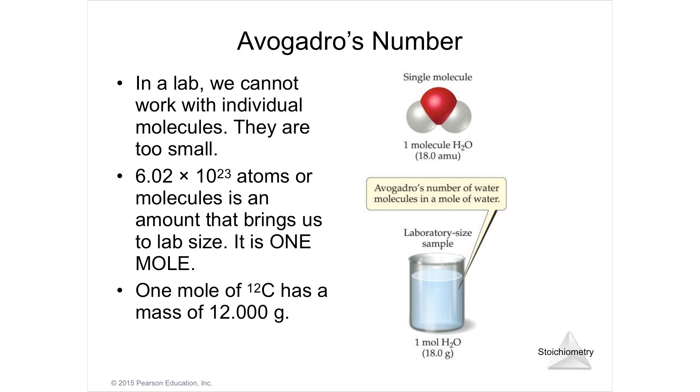Avogadro's number, which is named not for the guy who discovered this, but it was named memorially for a scientist, is a certain amount that is equal to the amount in grams on the periodic table of any element. If you look on the periodic table and you see in AMUs the atomic mass, let's say carbon, the atomic mass under carbon is 12, right?